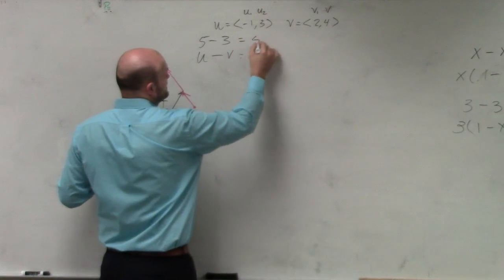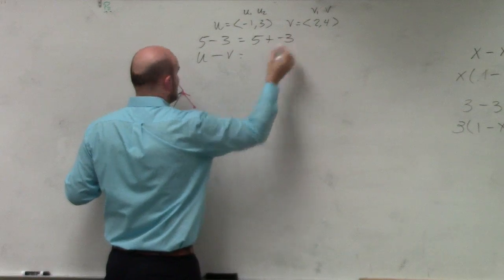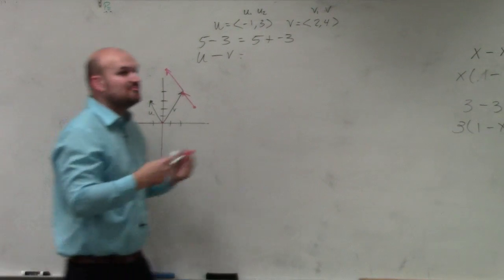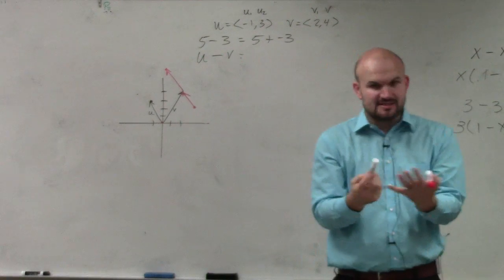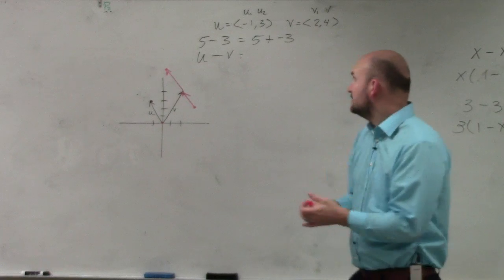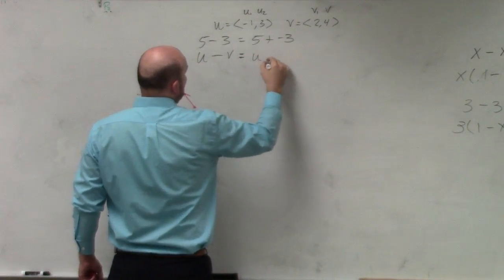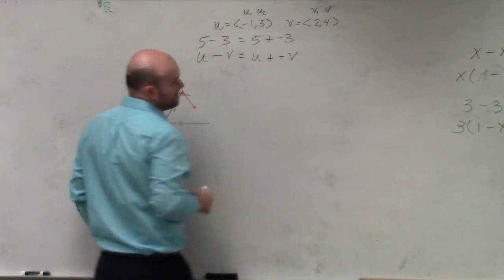Or I could rewrite this as 5 plus negative 3. Or sometimes even subtraction, yeah, it was a little confusing. So we wanted to say, well, we can rewrite that as 5 plus negative 3. Always keep things in addition, right? Would you guys agree? So I can rewrite this as u plus negative v.